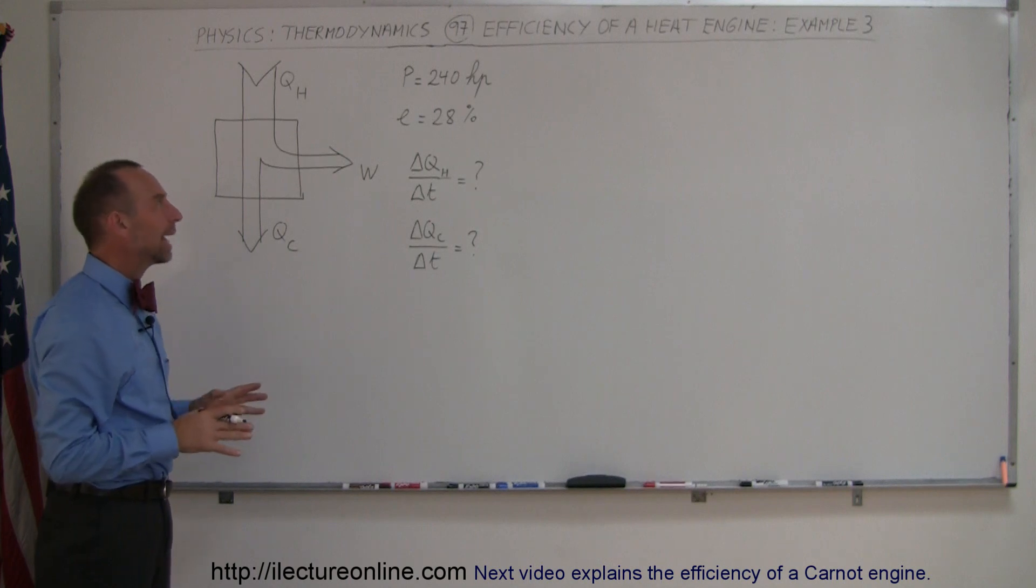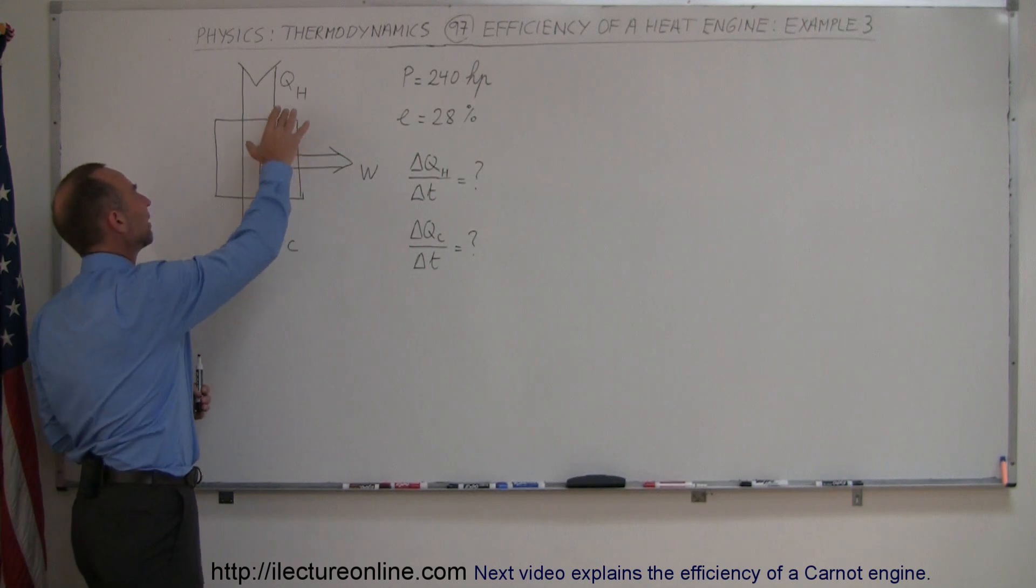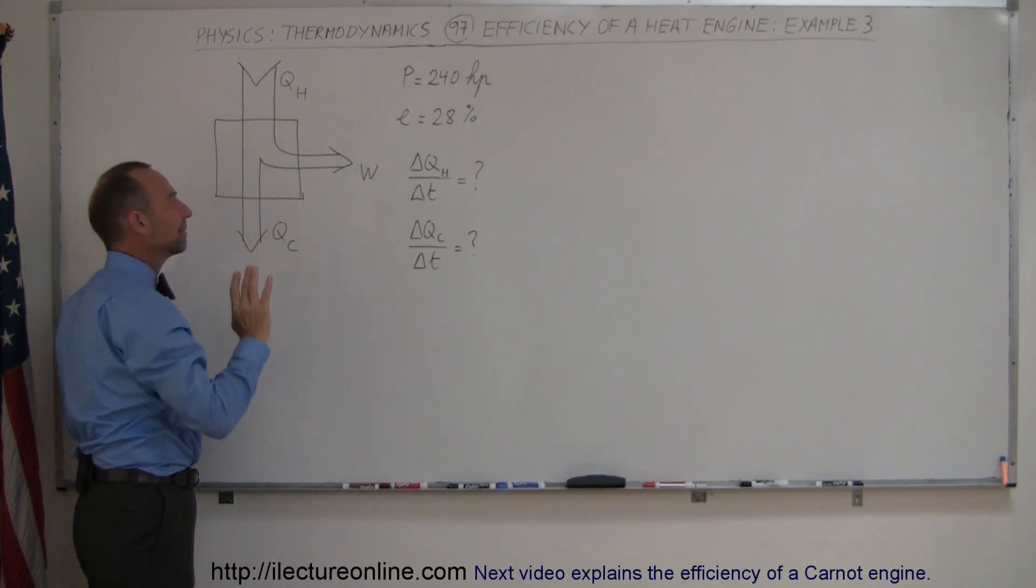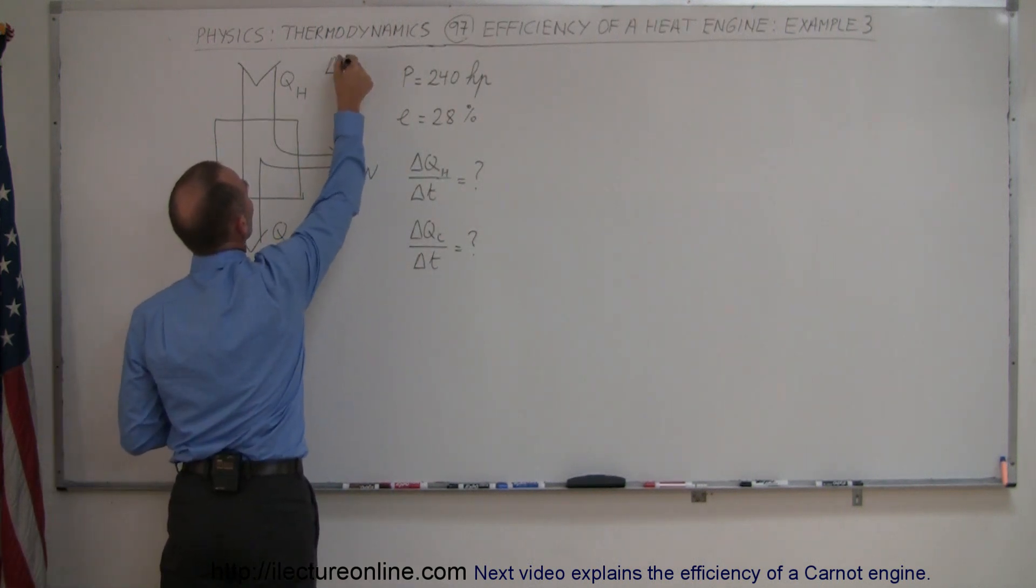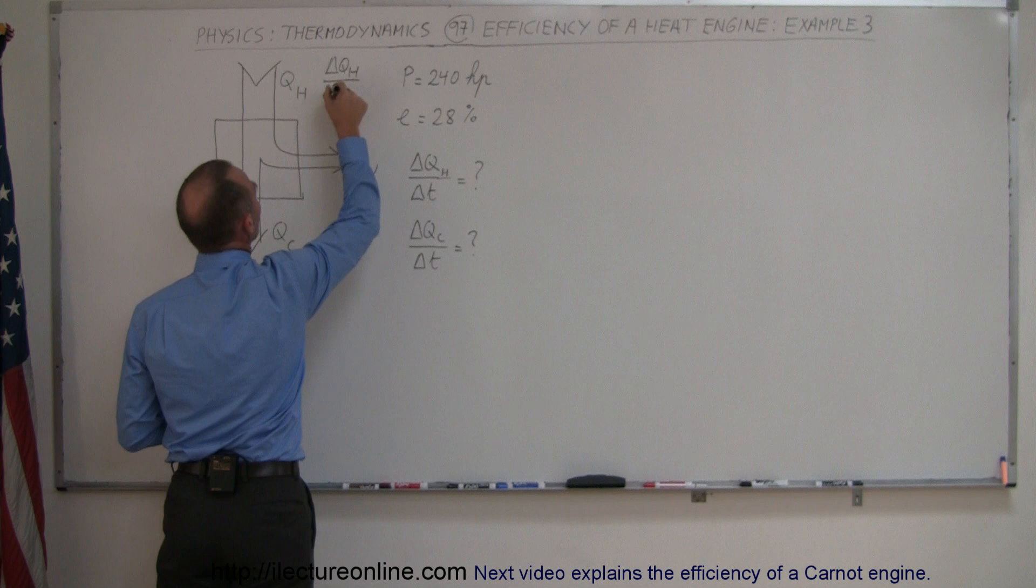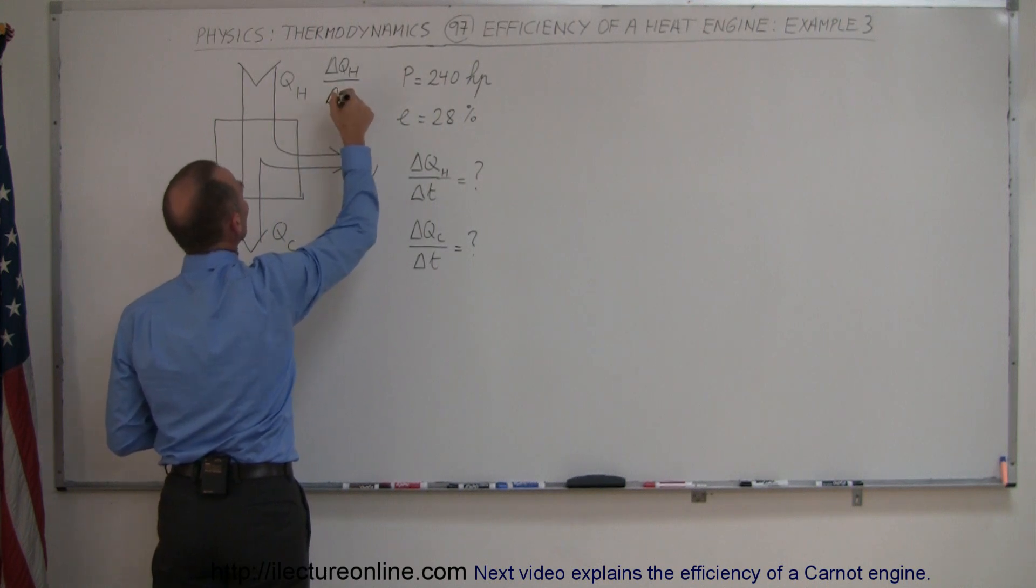So the way to do that is to simply divide each of these three here by time, because if we go to change of the hot reservoir or the rate at which the temperature,